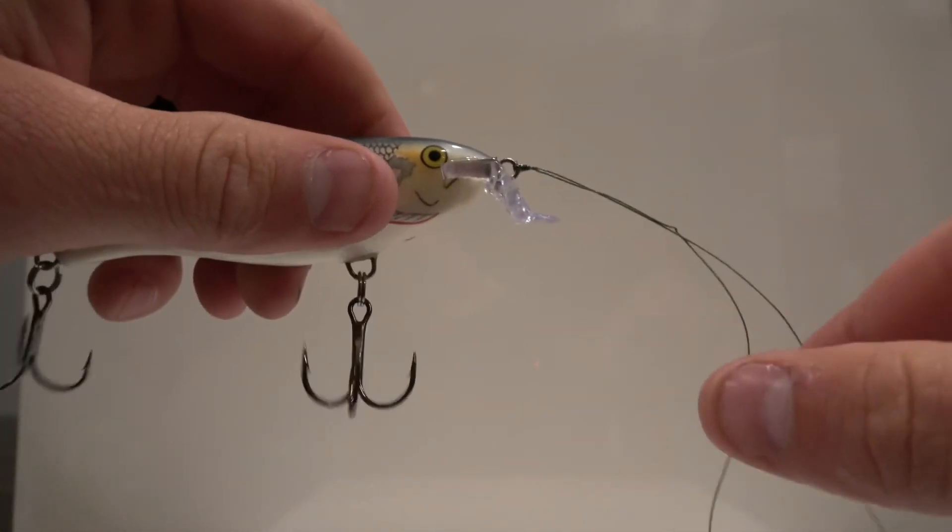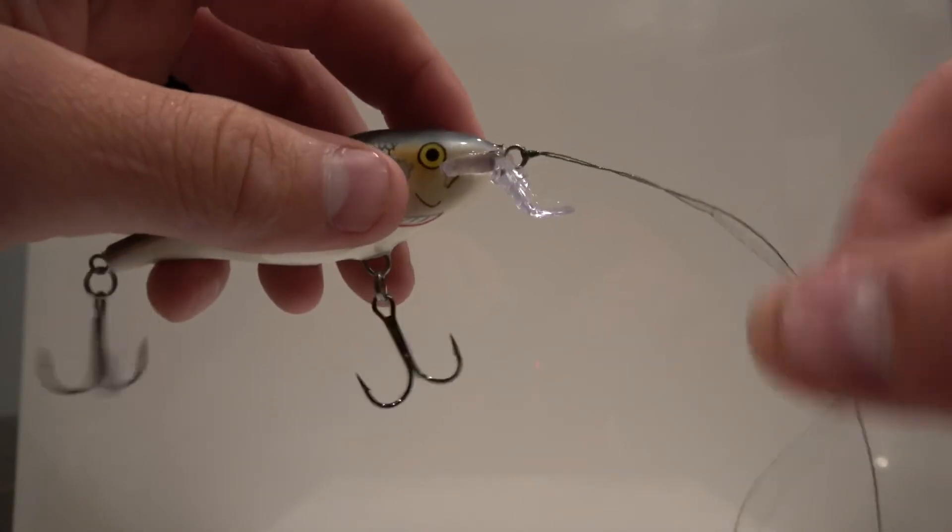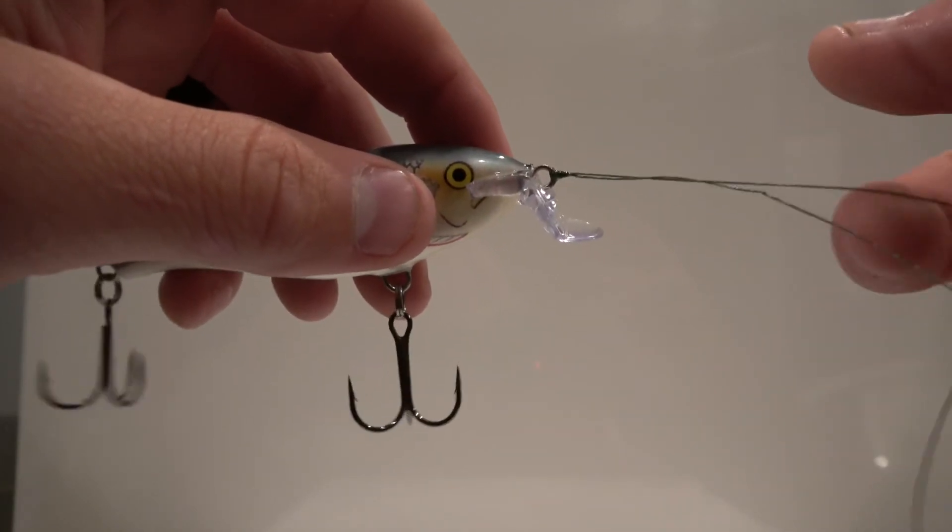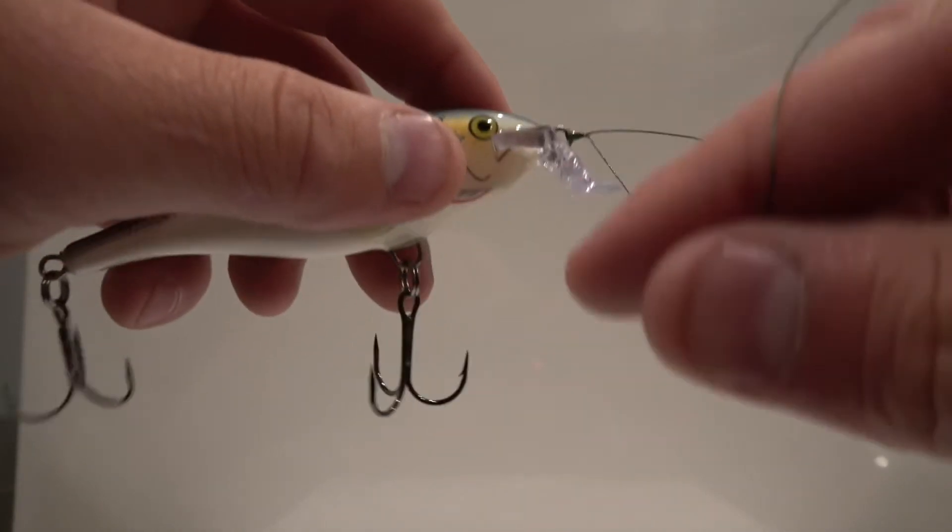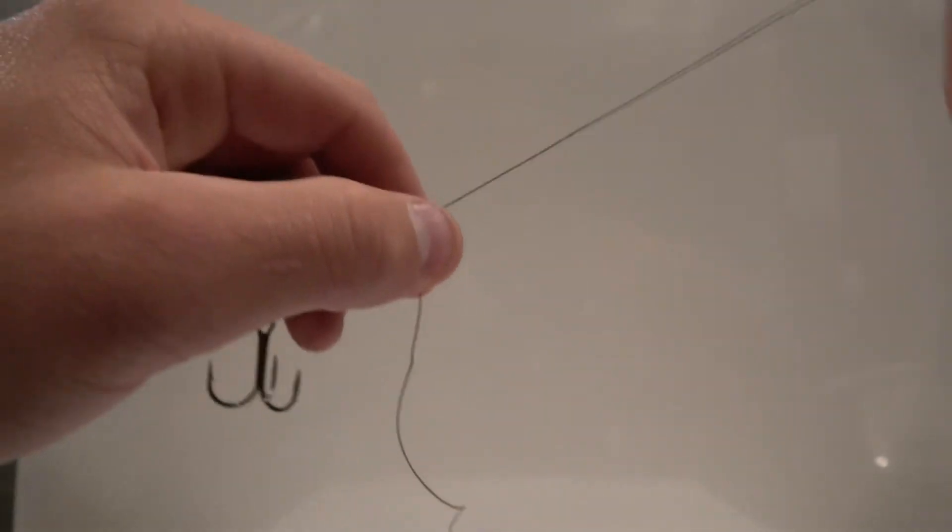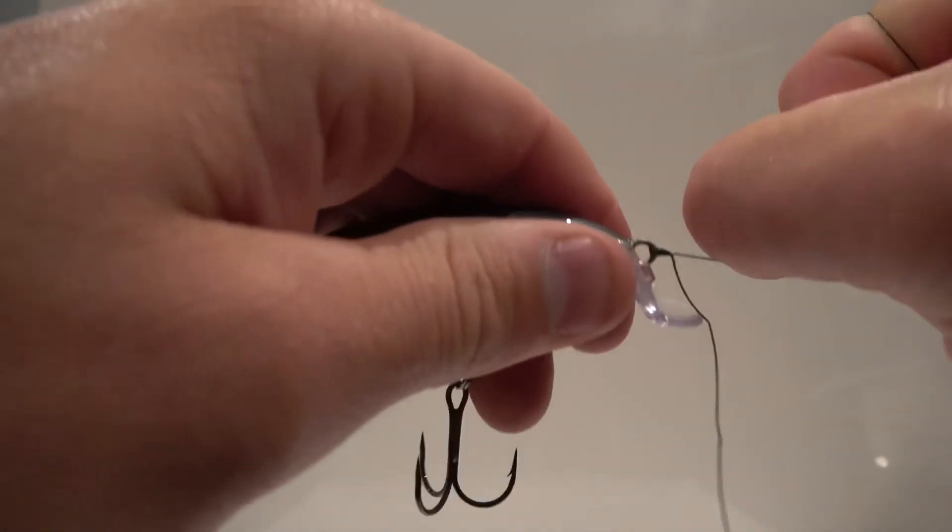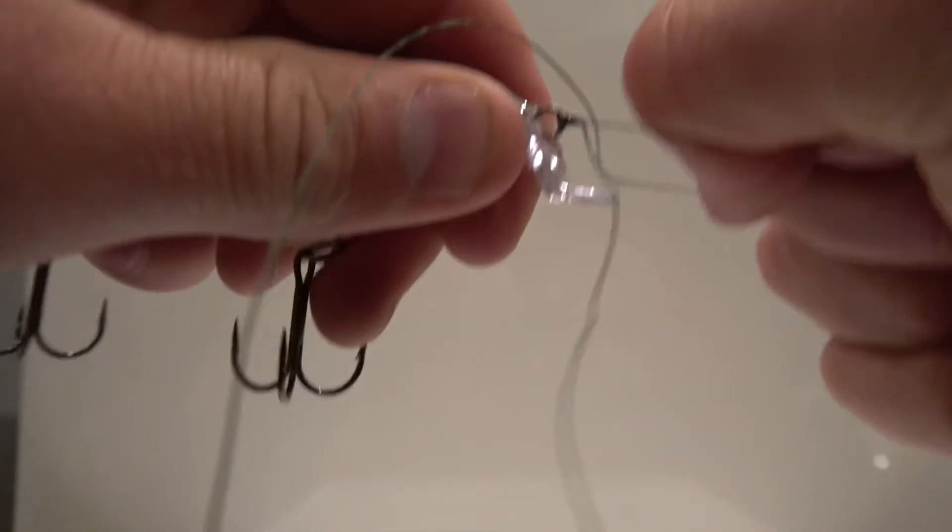And that is the best knot for braided line, and it's called the uni knot. Braided line is super slippery, so you got to tie a nice good knot.